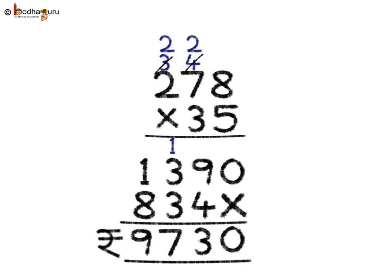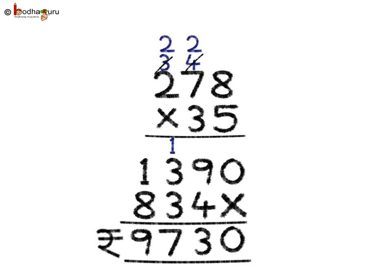The answer is 9,730 rupees. Understood? So we see 278 multiplied by 35 is equal to 9,730 rupees. Thus the cost of 35 school bags is 9,730 rupees.